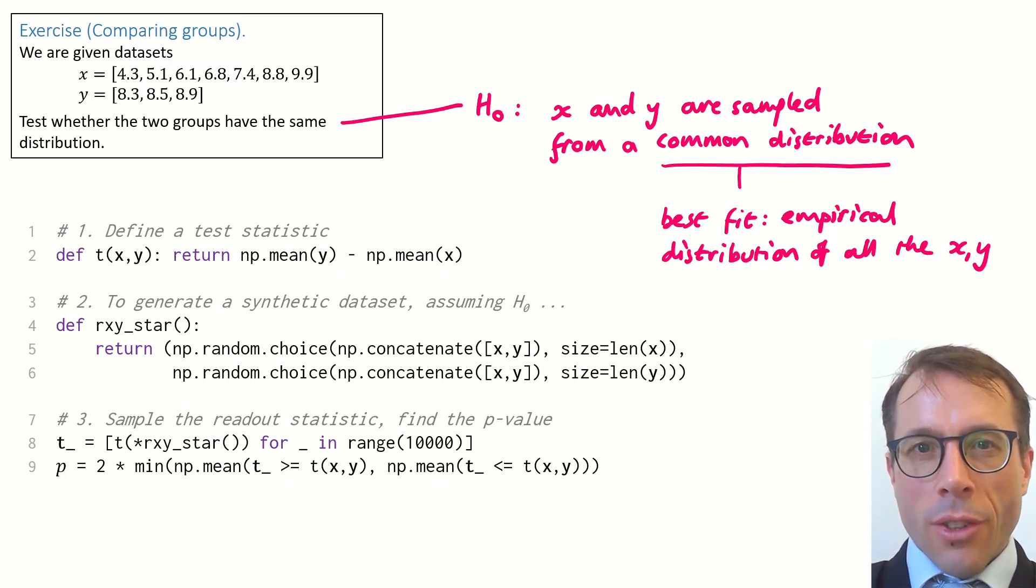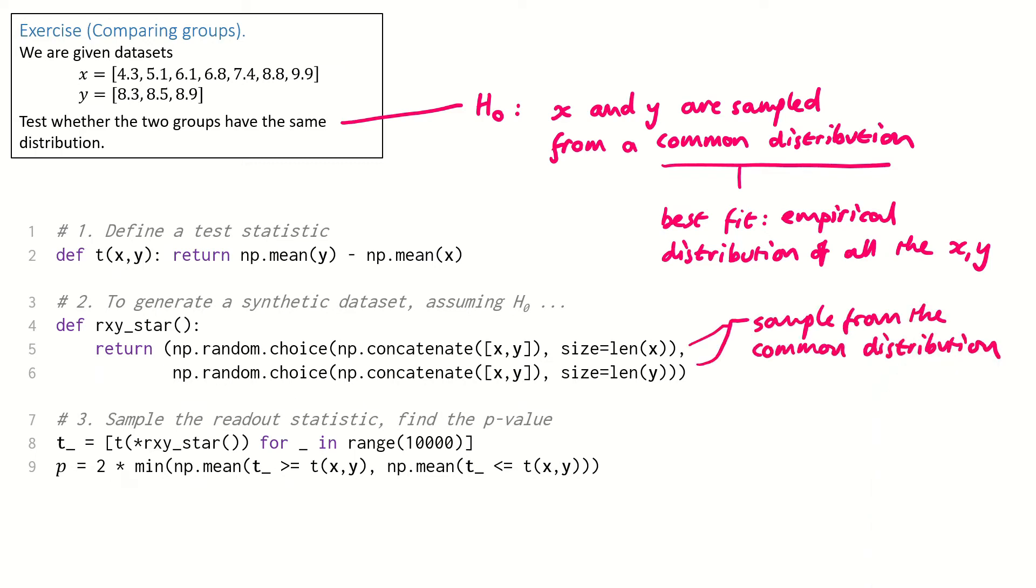So now it's easy to see how to generate a synthetic dataset under the assumption that H0 is true. If H0 is true, then both X and Y are drawn from that common distribution. And that's exactly what this code does.